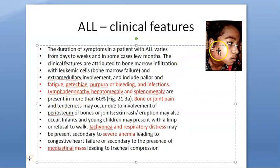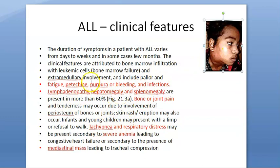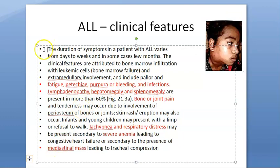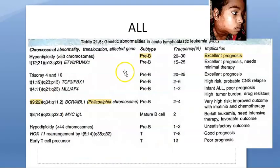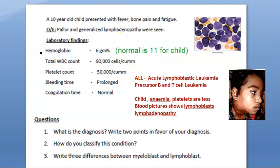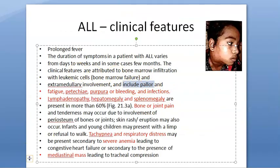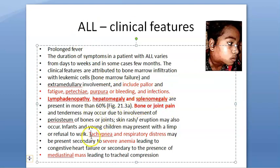The clinical features include fatigue, prolonged fever, pallor, petechiae, purpura, bleeding, infections, lymphadenopathy — which is very important — hepatosplenomegaly, hepatomegaly, splenomegaly, bone pain, and joint pain as given in the case study. There is also tachypnea, respiratory distress, and severe anemia which presents as pallor. There can be a mediastinal mass depending on whether it is B-cell or T-cell ALL.